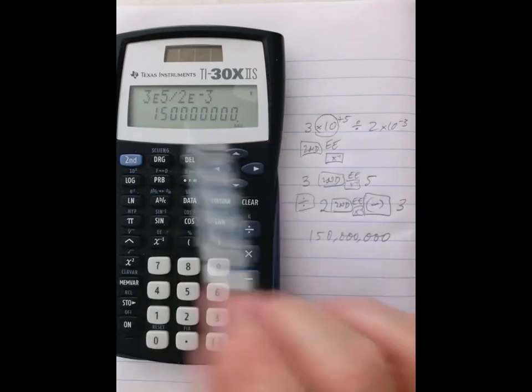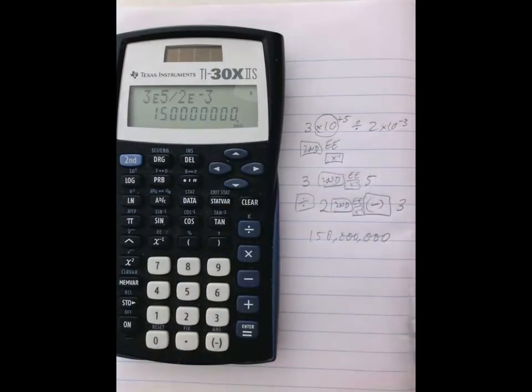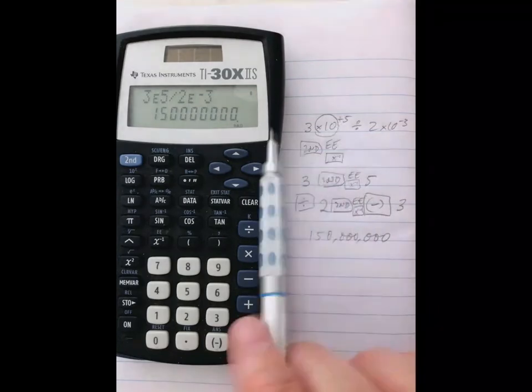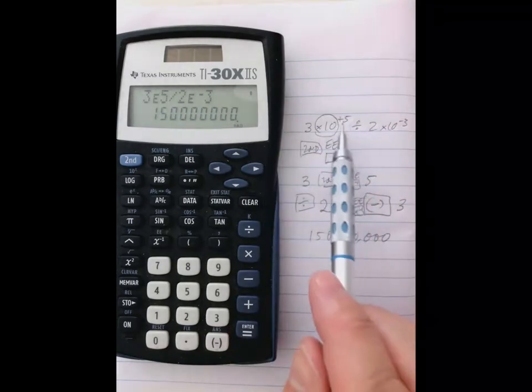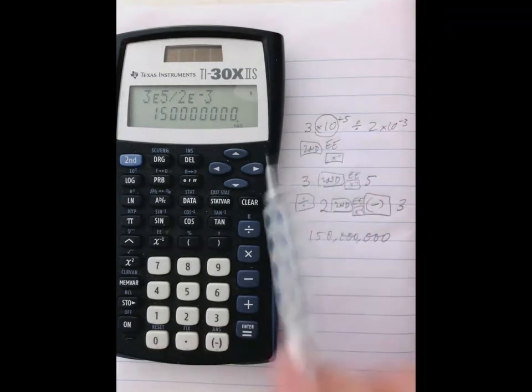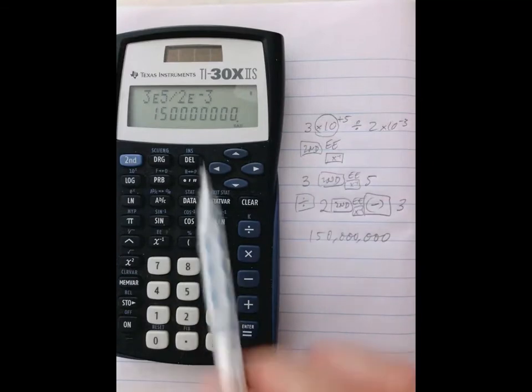The whole point of scientific notation is so you don't have to count the zeros. It's to look at the number and tell right away what kind of order of magnitude it is.